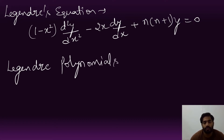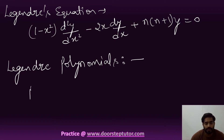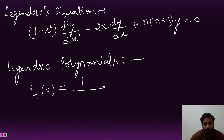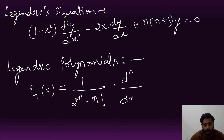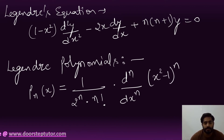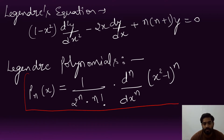Questions come mainly on the Legendre polynomial. You must remember P_n(x) equals 1 over 2^n into n factorial, into d^n/dx^n of (x² minus 1)^n. This is the most important polynomial equation because every year a question comes in each exam — NET, GATE, or whatever.